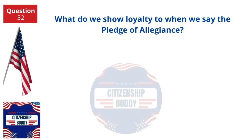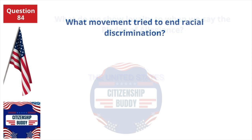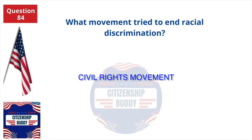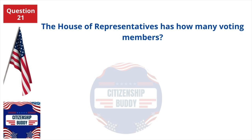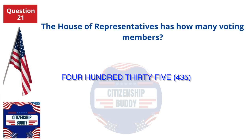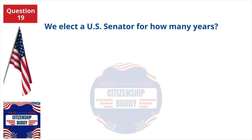What do we show loyalty to when we say the Pledge of Allegiance? The United States. What movement tried to end racial discrimination? The civil rights movement. The House of Representatives has how many voting members? 435. We elect a US Senator for how many years? 6.